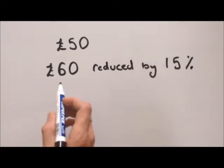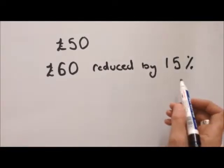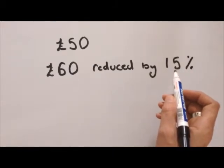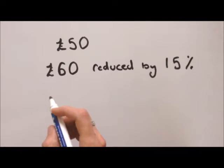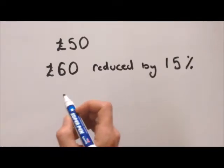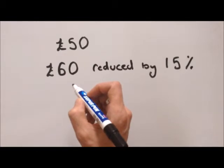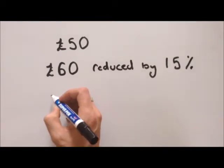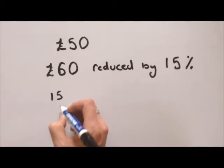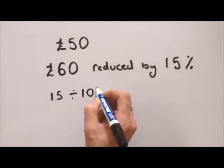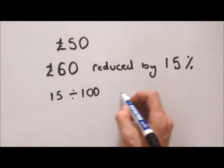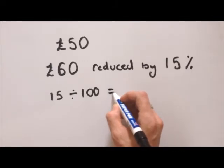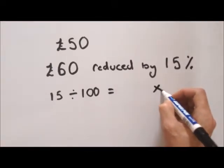You've got to imagine we're cutting this 60 into 100 pieces and finding out what 15 of those add up to — can Billy afford his game? We'll discuss this in more detail in another video about calculating percentages of numbers, but here's a quick example. We take 15 and divide it by 100, and then with that answer we multiply it by 60.